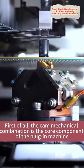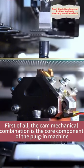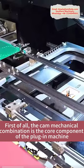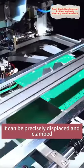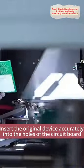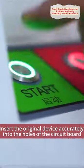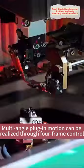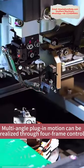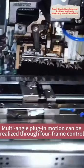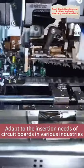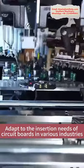First, the cam mechanical combination is the core component of the plug-in machine. It can be precisely displaced and clamped, insert the original device accurately into the holes of the circuit board. Multi-angle plug-in motion can be realized through four-frame control, adapt to the insertion needs of circuit boards in various industries.